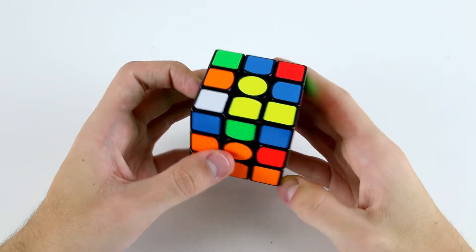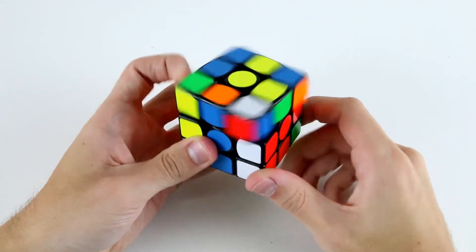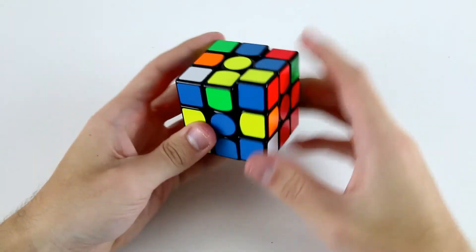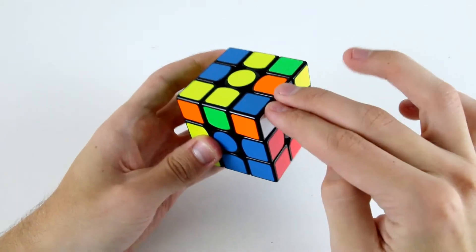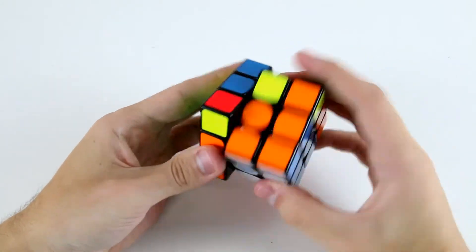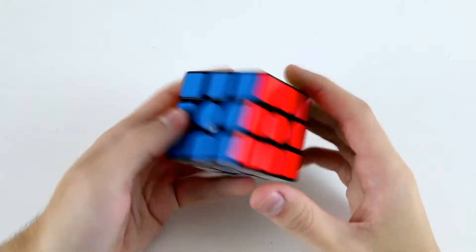Then I would probably rotate and solve this edge and this corner like that. And as I'm doing that, I'm watching this corner and this edge because that's my last F2L pair, and they ended up over there so I can solve them like that. Then I've got an OLL and luckily enough got a PLL skip, which is nice.